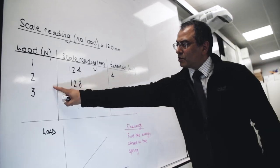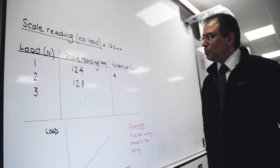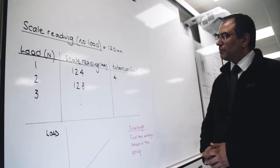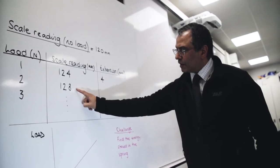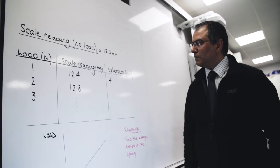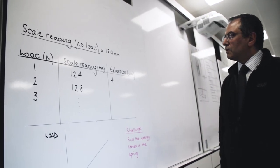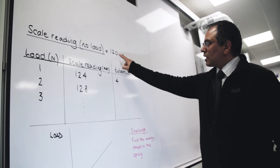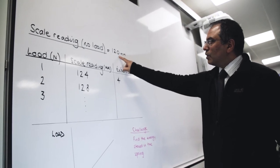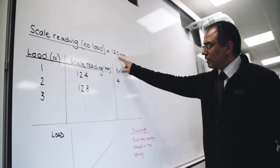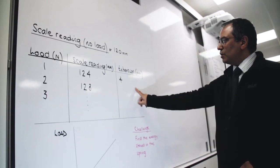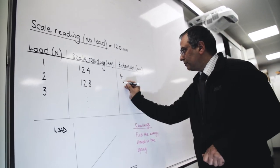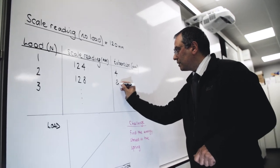Now, when I attach the second load and I get a new reading of 128, it is a common mistake to think that the stretch of the spring is 4 millimeters in this case. I'm afraid it is not. You subtract the original length, or the natural length of the spring, from the stretched length to get the new extension, which will be 8 millimeters.